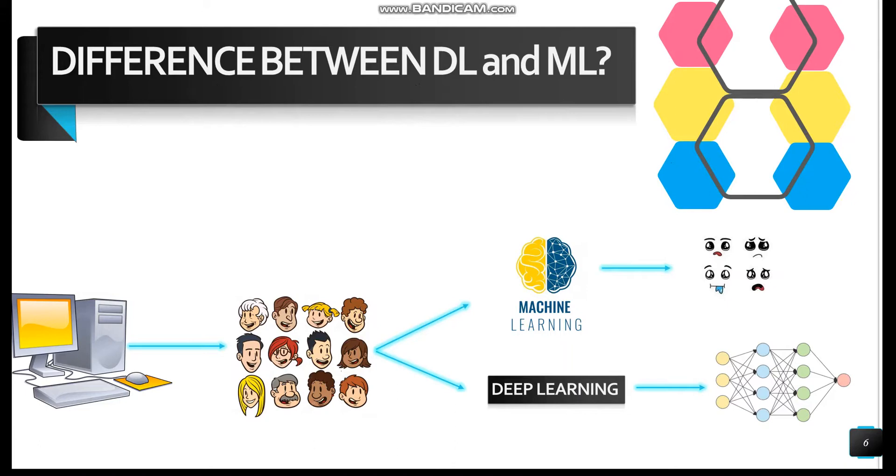Now if you consider Deep Learning for the same example, Deep Learning will automatically find out the features which are important for classification because it uses the concept of Neural Networks. Whereas in Machine Learning, we have to find out each and every facial feature on its own. That's the main difference between Machine Learning and Deep Learning.